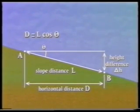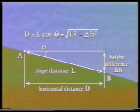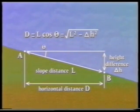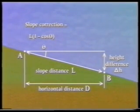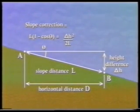If the difference in height between A and B has been measured by leveling, then by Pythagoras' theorem, D equals the square root of L squared minus delta H squared. Although both of these formulae give horizontal distance, it is preferable to turn them into corrections to be applied to the original measured length L. The slope correction equals L multiplied by (1 minus cos theta) if the slope angle is known, and delta H squared divided by 2L if the height difference is known. These are always subtracted when converting slope lengths into horizontal lengths.